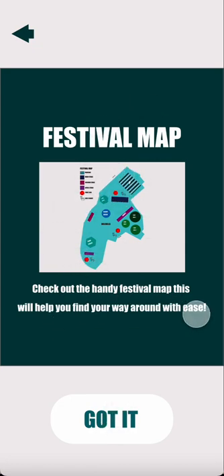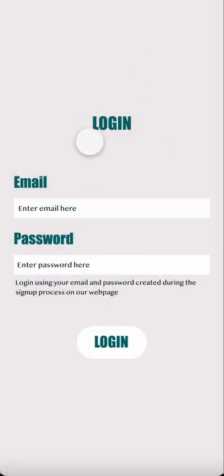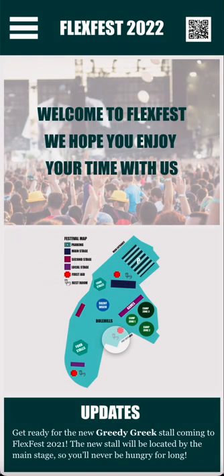There's also a festival map image which tells them they can check out the handy festival map, with tips on where to go and where to find things. Pressing 'got it' goes to the entrance screen, which is clickable and takes the user to the login page where they enter their email and password and log in that way.